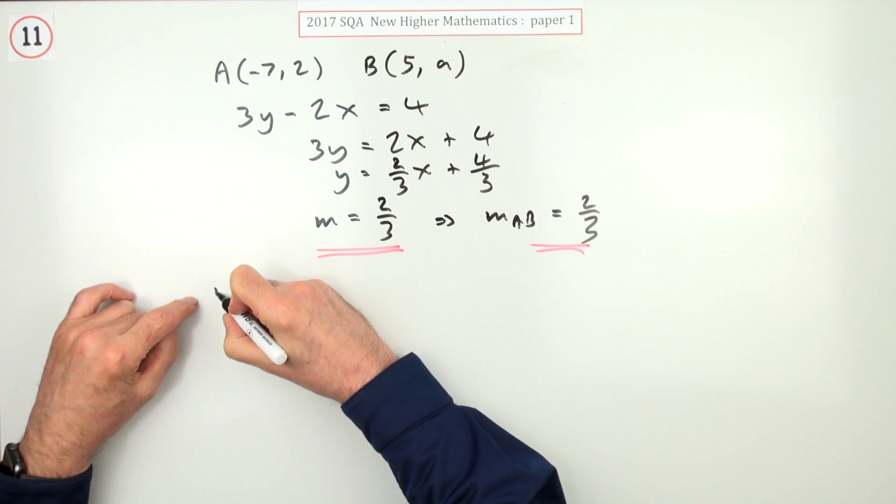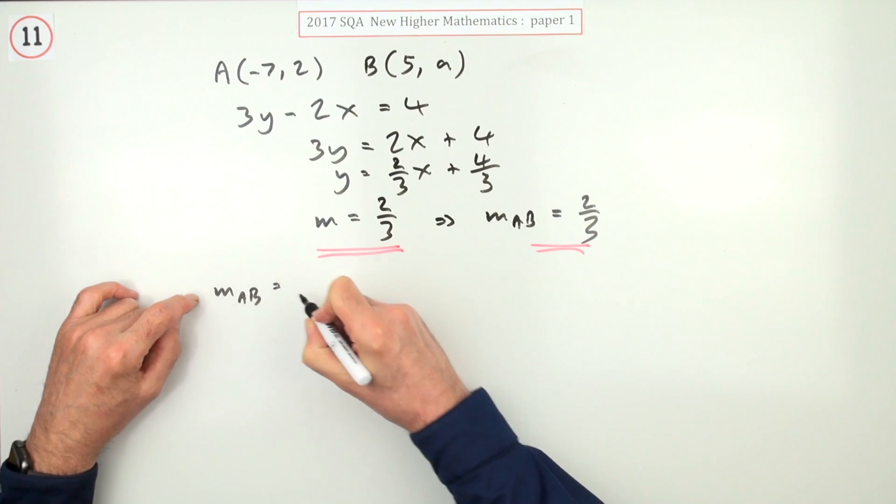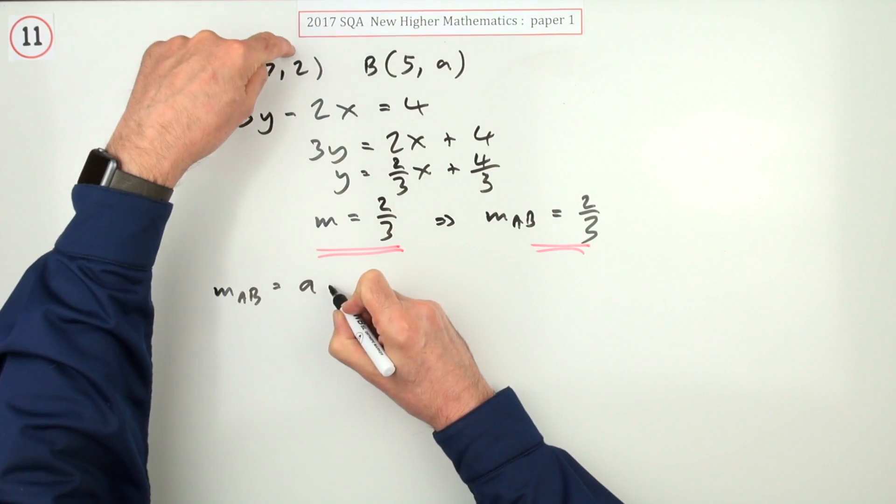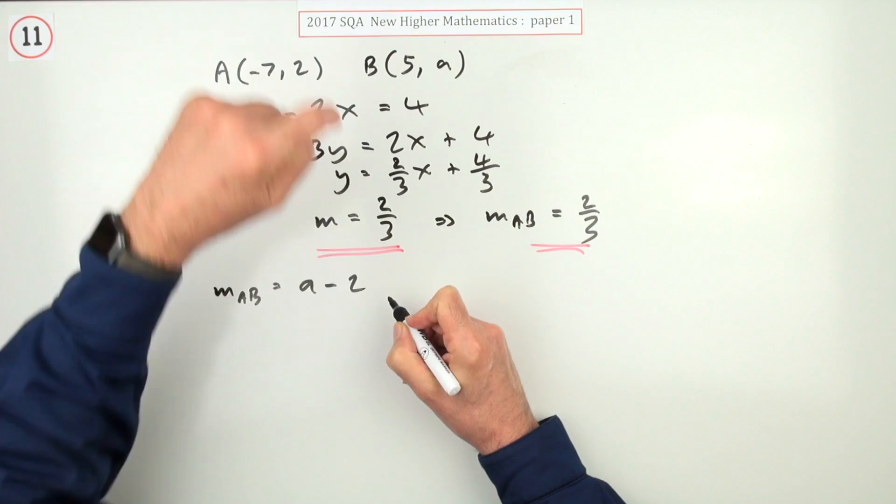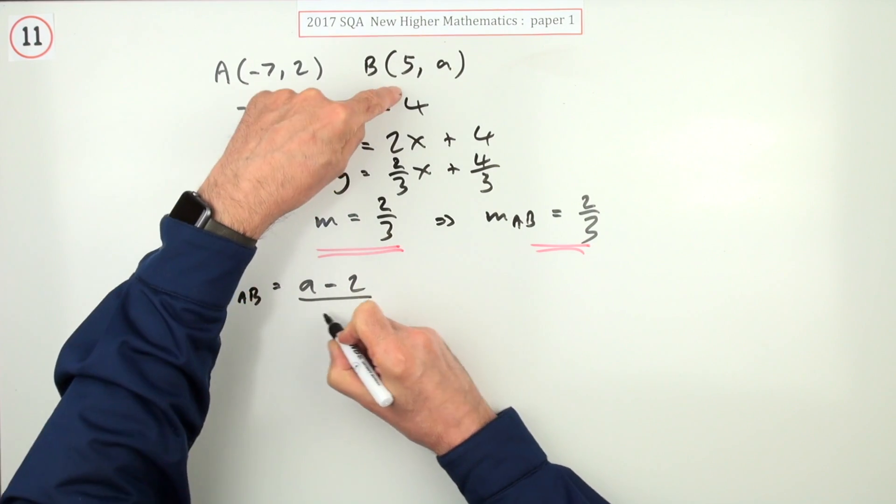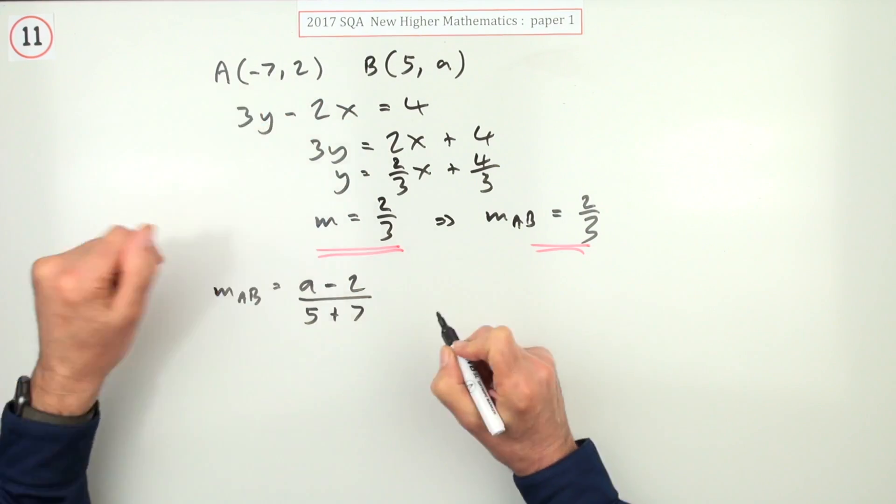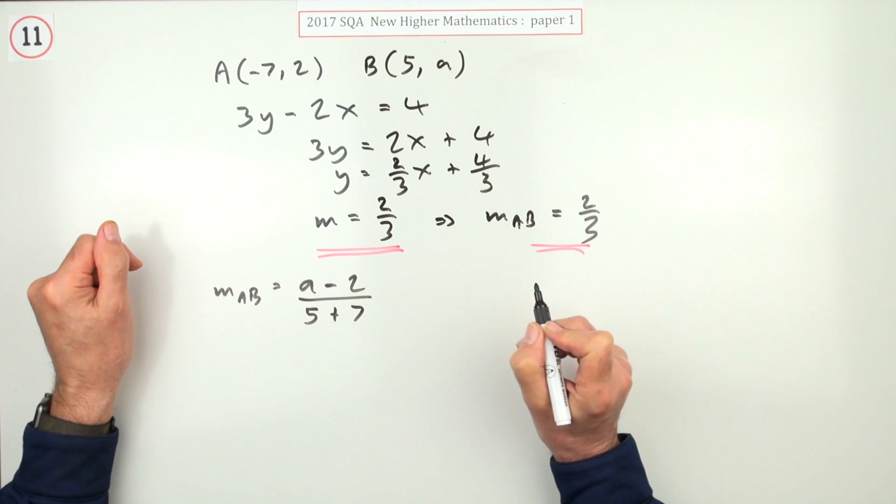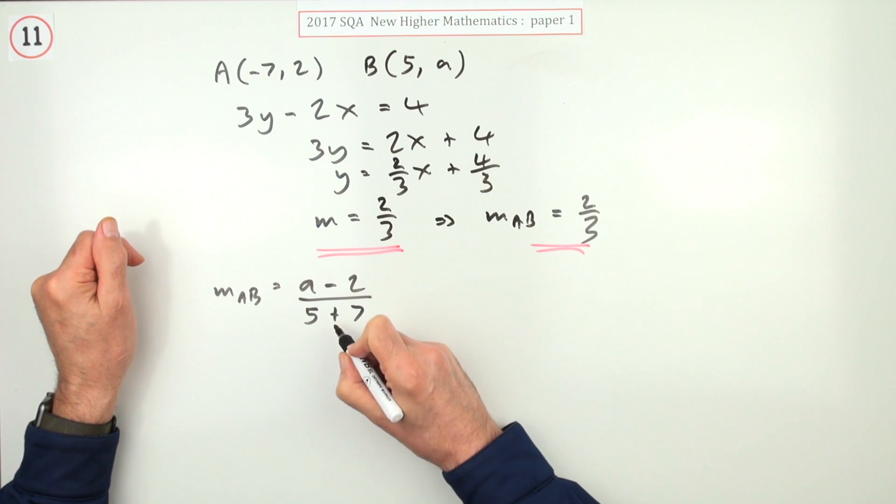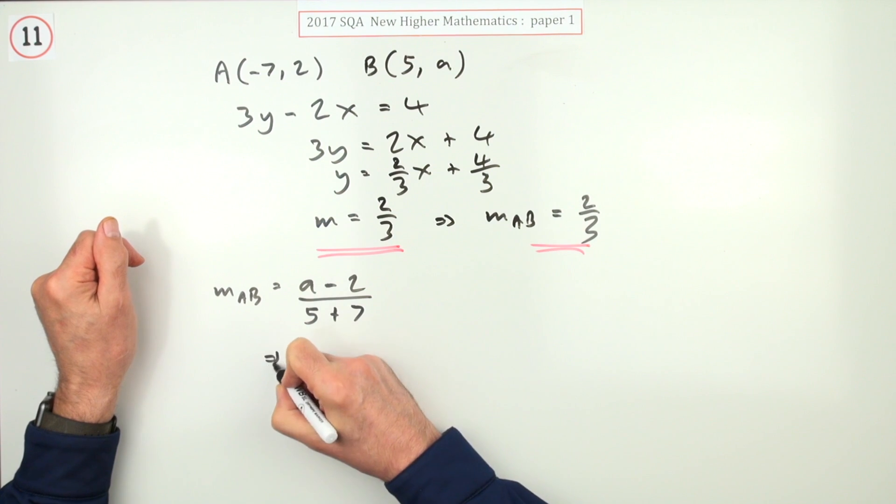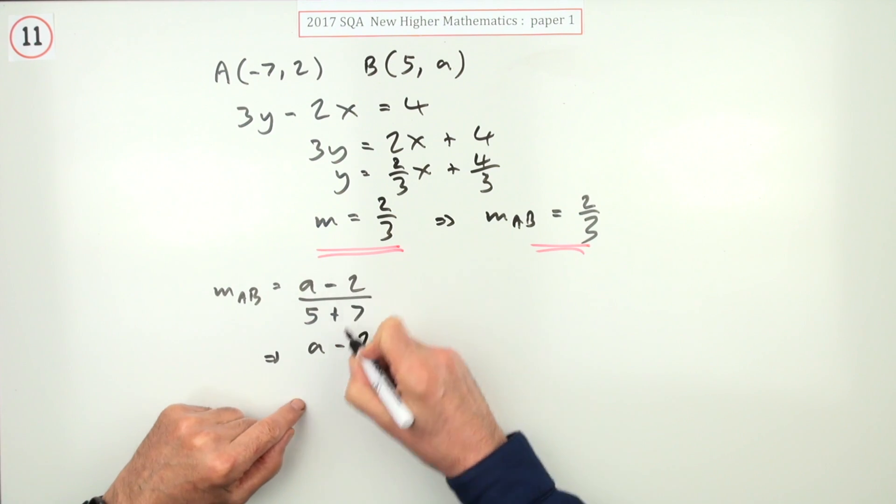So what is the gradient of AB? Well, that would be a minus 2 for y2 minus y1, the difference in the y coordinates, over 5 take away negative 7, so I'll just put as 5 plus 7, the difference in the x coordinates. So that difference should be equal to two-thirds.